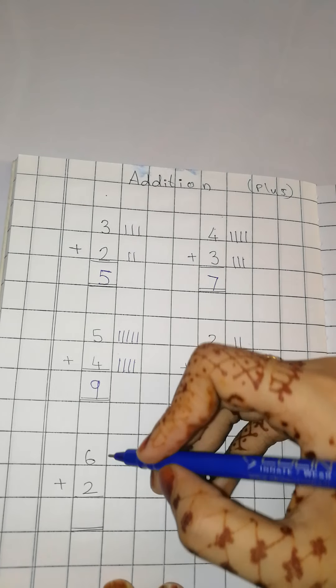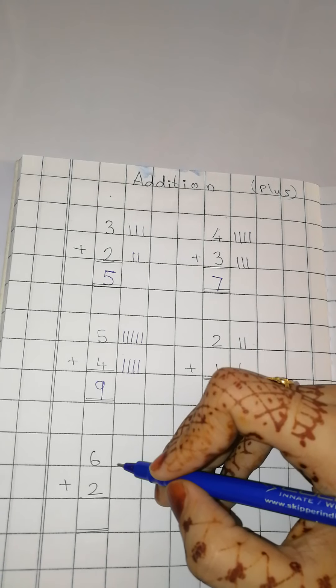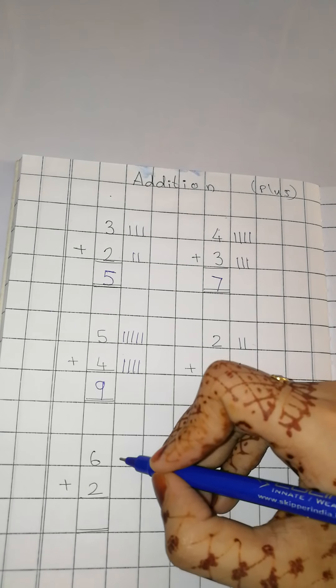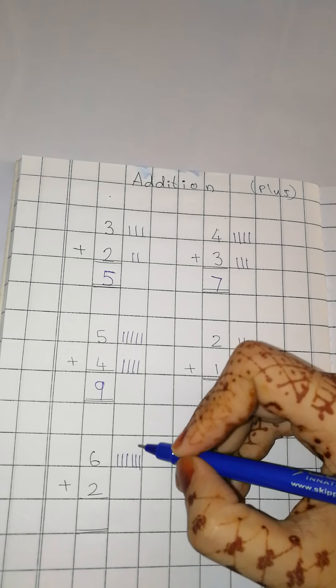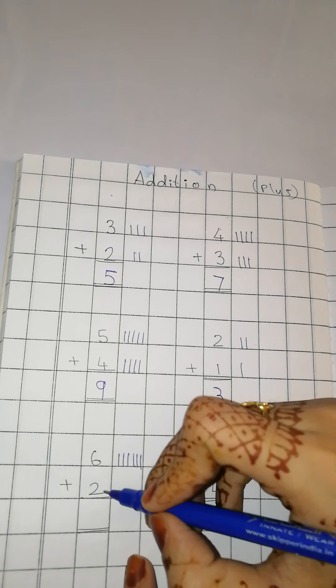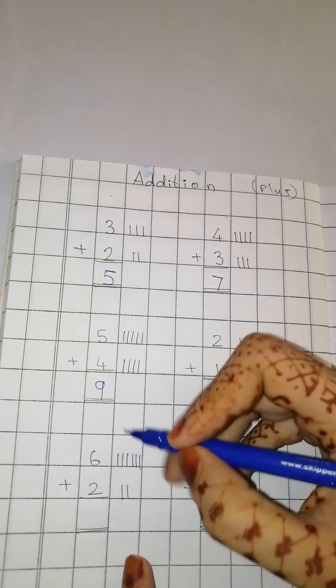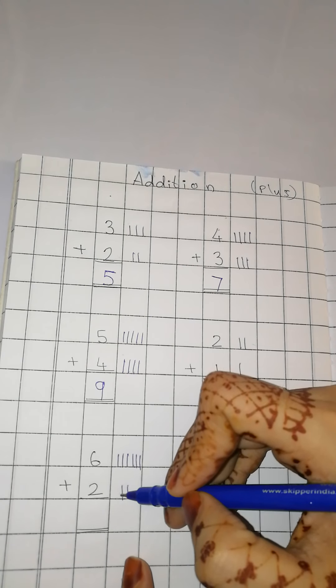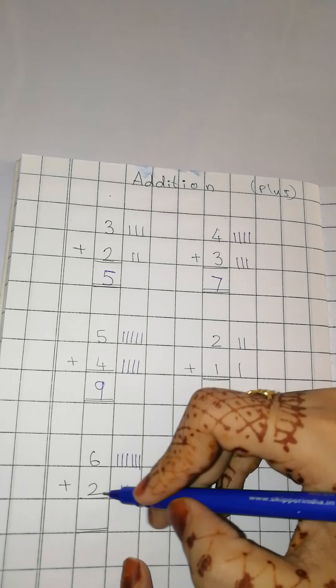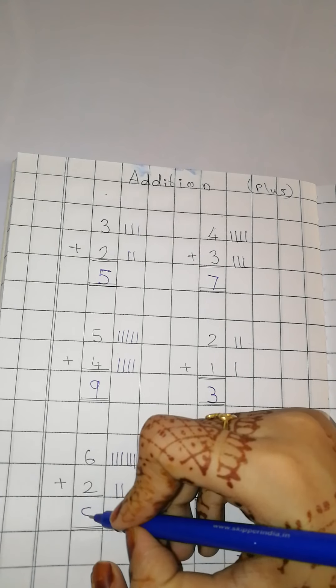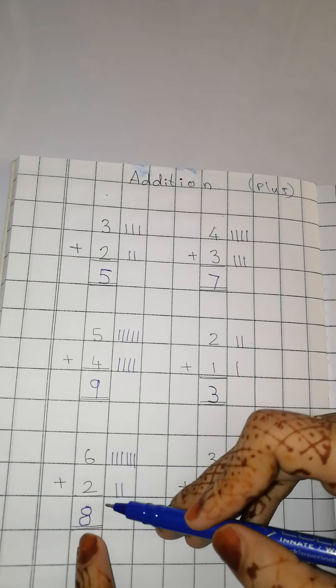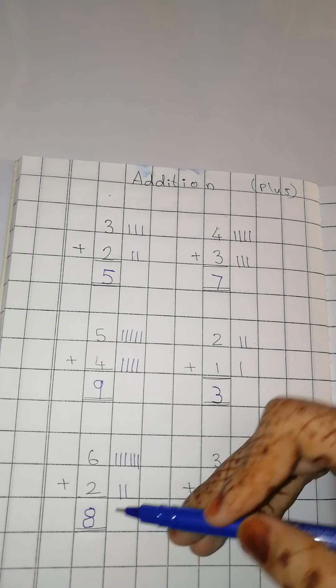Now next. Can you tell me what is the number? Yes. It is 6. 1, 2, 3, 4, 5, 6. And how many numbers? 2. 1 and 2. So 6 ke baad kya aata hai? What number comes after 6? 7, 8. Number 8. Yes. So 6 plus 2 equals to 8.